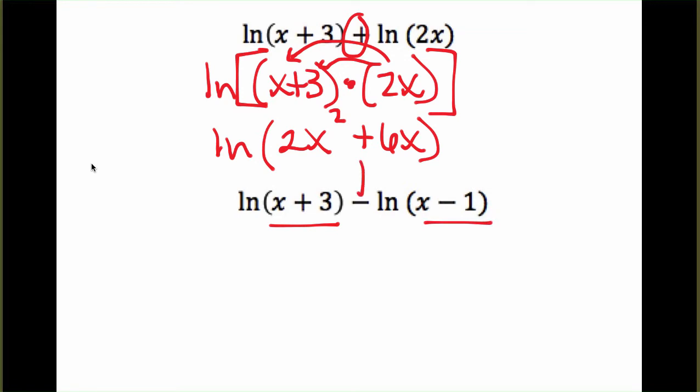Here, we have subtraction. And subtraction, if you look at your properties, can be combined into one using division. So since both of these are natural logs, we'll just divide. (x plus 3) divided by (x minus 1).